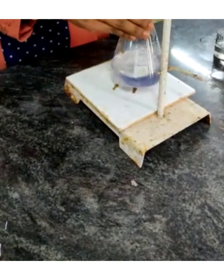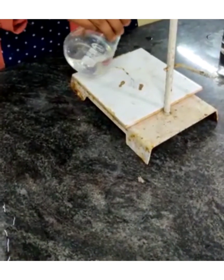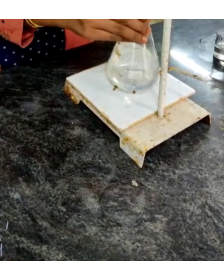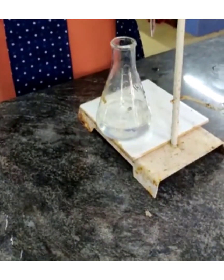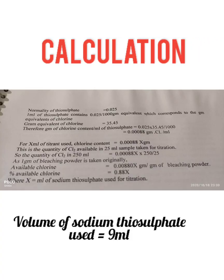Note down the titer value, i.e., the volume of sodium thiosulfate used. The percentage of available chlorine in bleaching powder is calculated using the equation 0.88x, where x is the volume of sodium thiosulfate used for titration.